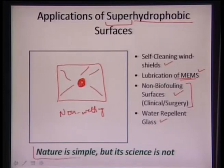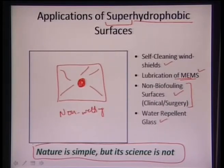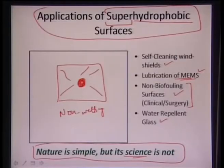This idea comes from the lotus leaf. We can say that nature appears simple, but the science behind it is not — there is a level of complexity associated with the lotus leaf, and the science dictating its super hydrophobic nature is much more complex than what it appears on the surface.